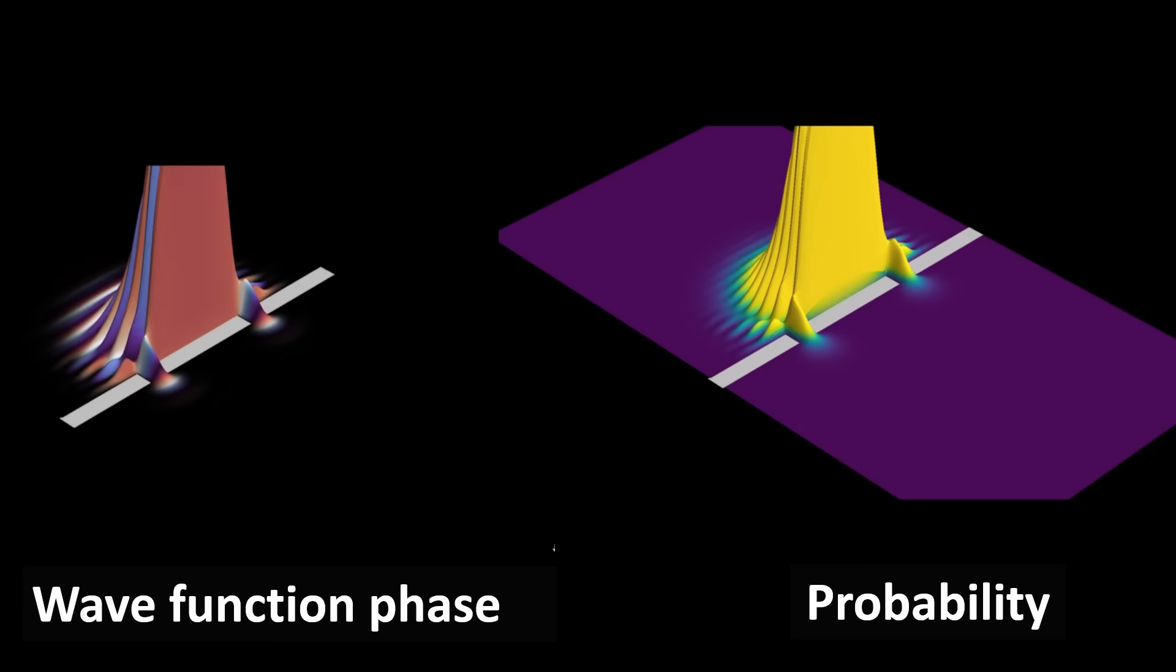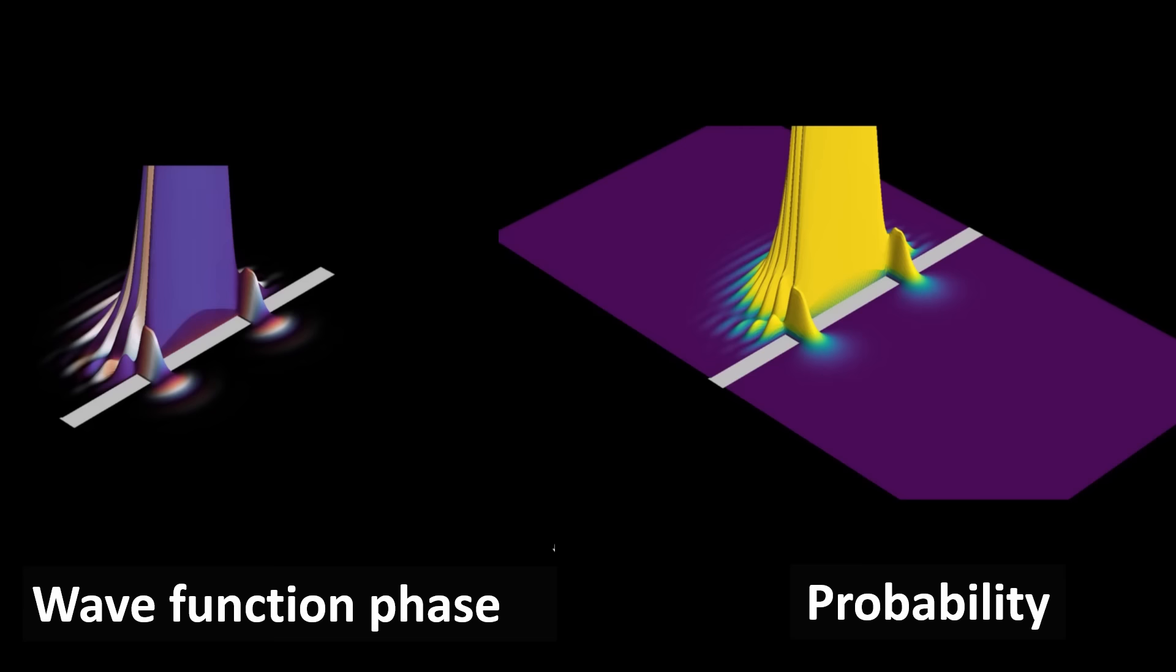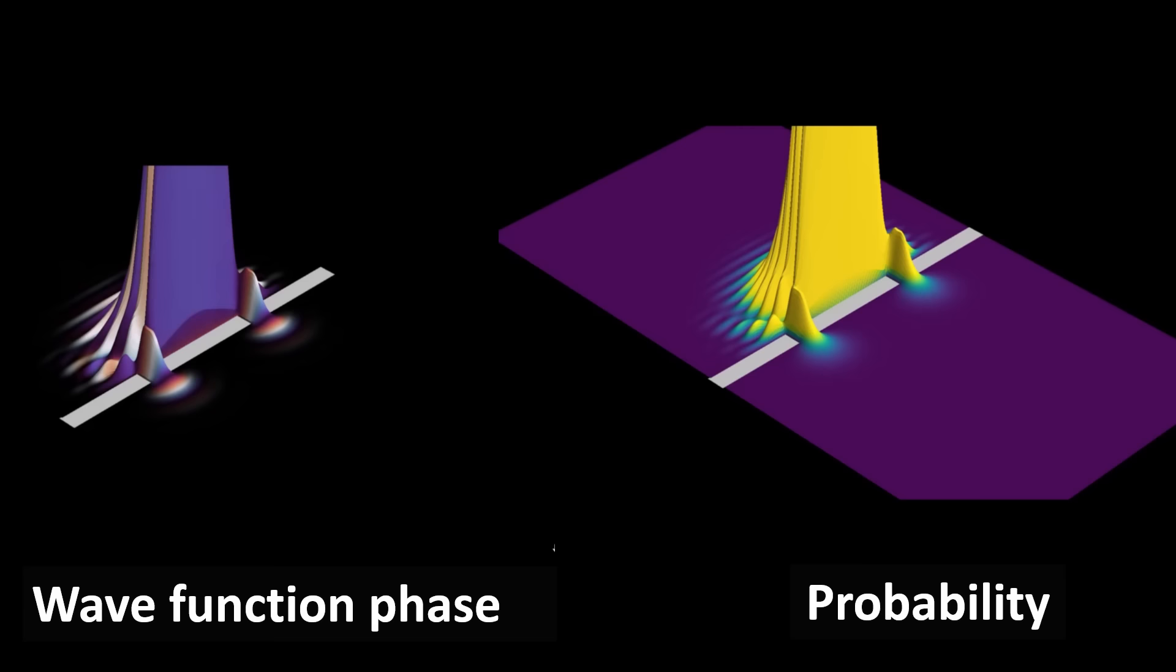And to the right we see what this means in terms of spatial probability. It really doesn't matter what this particle is exactly, but it might for example be a moving electron.